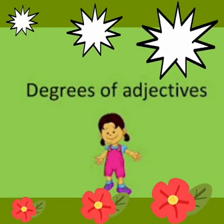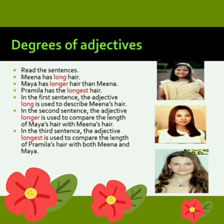Hello students, let's learn degrees of adjectives. Read the sentences. Meena has long hair. Maya has longer hair than Meena. Pramila has the longest hair. In the first sentence, the adjective long is used to describe Meena's hair. In the second sentence, the adjective longer is used to compare the length of Maya's hair with Meena's hair. In the third sentence, the adjective longest is used to compare the length of Pramila's hair with both Meena and Maya.